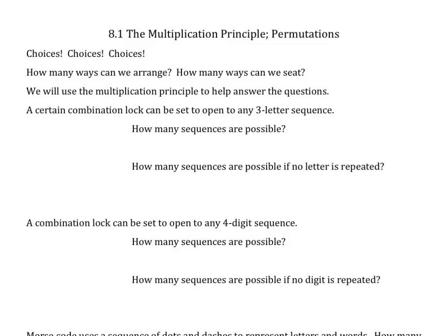A certain combination lock can be set to open to any three-letter sequence. How many sequences are possible? If we have a three-letter sequence and there are 26 letters, we have 26 options for the first one, 26 options for the second one, and 26 options for the third one. If we multiply all of these together, we end up with 17,576 possible sequences.